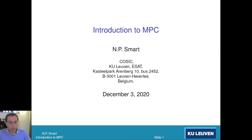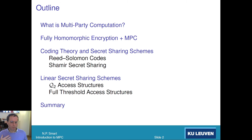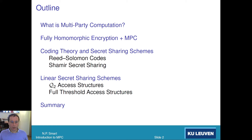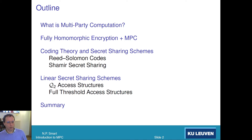This is a first in a series of talks where we're going to be trying to introduce practical MPC. In the first section of the course, we're going to be discussing what is multi-party computation, what is fully homomorphic encryption, and how this can be used to do a very simple MPC protocol. We're then going to look at coding theory and secret sharing schemes and how they're related, and then generalize those things, which are based on Reed-Solomon codes, to more general access structures and full threshold access structures.